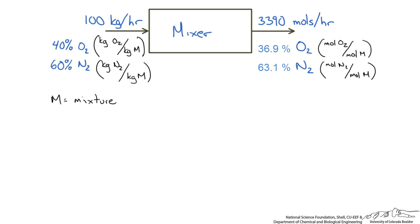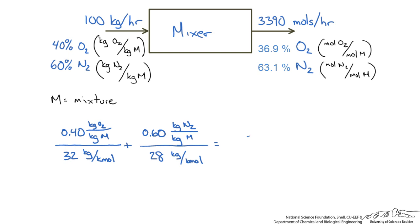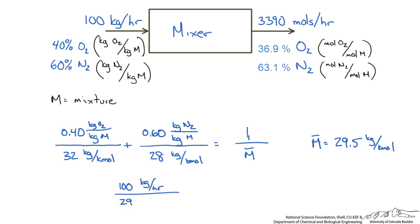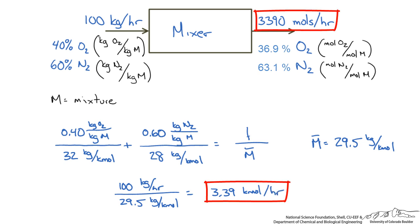So if we go back to our mixer of oxygen and nitrogen and use what we just worked out for average molecular weight — we are given a mass fraction and we want a mole fraction — let's calculate the average molecular weight of the incoming stream knowing that we have mass fractions. We have 0.40 kilograms of oxygen per kilogram of mixture divided by the molecular weight of oxygen which is 32 kilograms per kilomole, and we do this for nitrogen as well. This equals 1 over the average molecular weight, so the average molecular weight of our mixture coming into this mixer is 29.5 kilograms per kilomole. So 100 kilograms per hour divided by our molecular weight gives us 3.39 kilomoles per hour, which is exactly what we got the first time through.